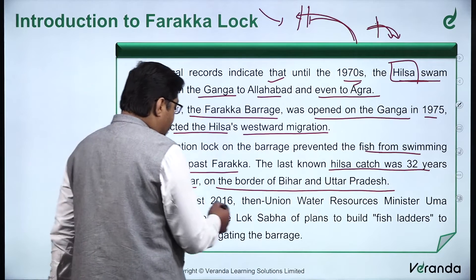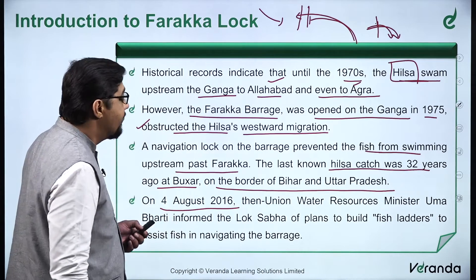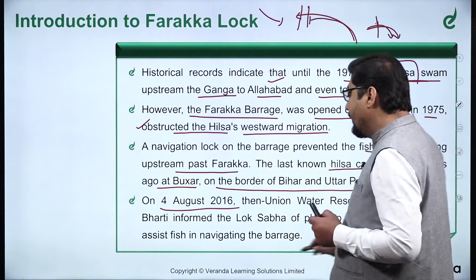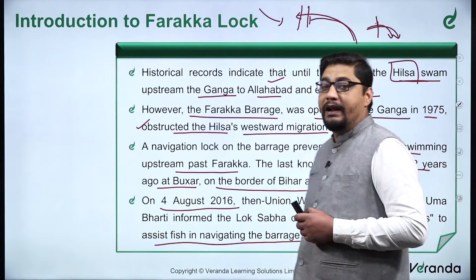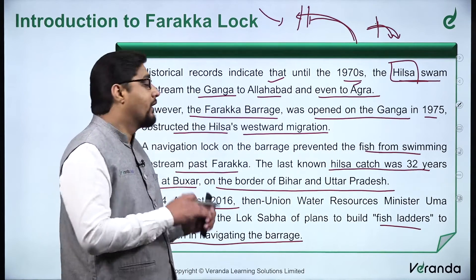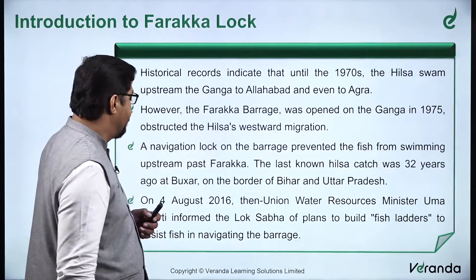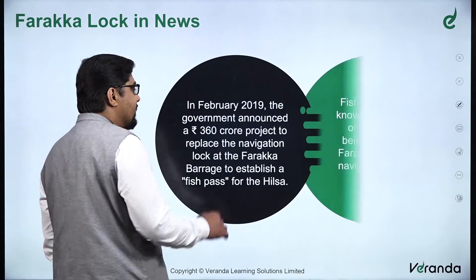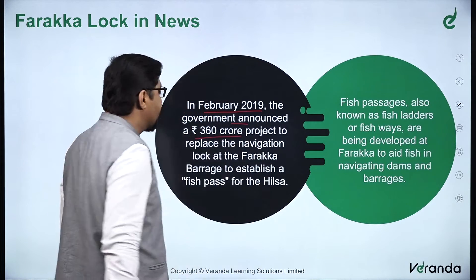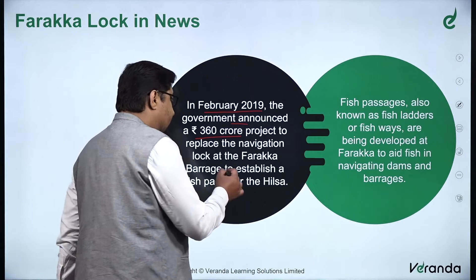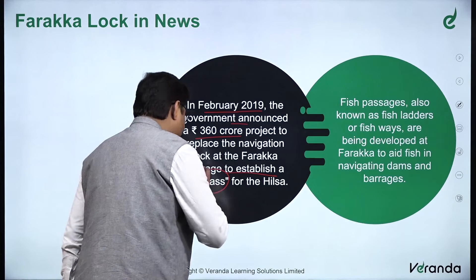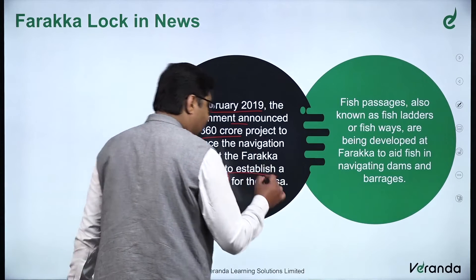On 4th August 2016, the then Union Water Resource Minister Uma Bharti informed the Lok Sabha of plans to build fish ladders to assist fish in navigating the barrage — a passage that would allow the Hilsa fish to cross the Farakka Barrage and go upstream. Then in February 2019, the government announced a Rs. 360 crore project to replace the navigation lock at the Farakka Barrage and establish a fish pass, specifically for the Hilsa fish.